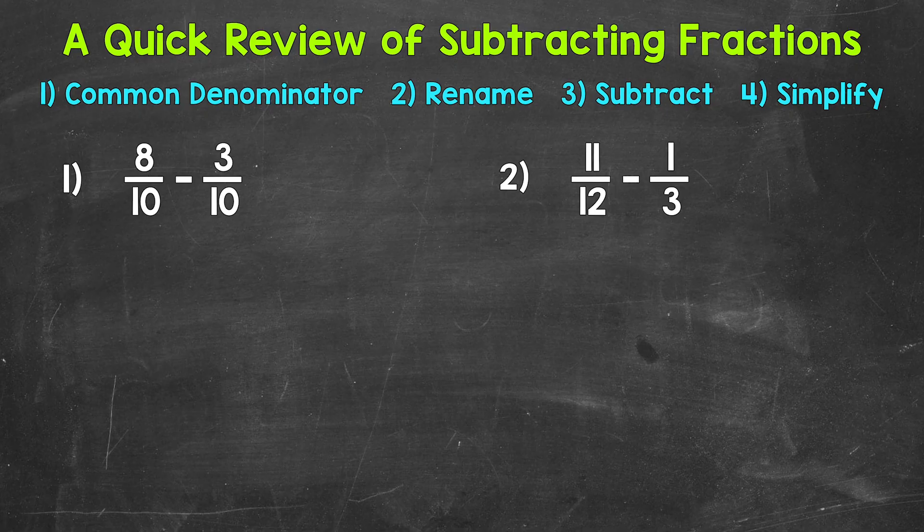For our numerators, we have 8 minus 3, that gives us 5. So this equals 5, and then our denominator of 10 stays the same, so we get 5/10. And that's our answer.